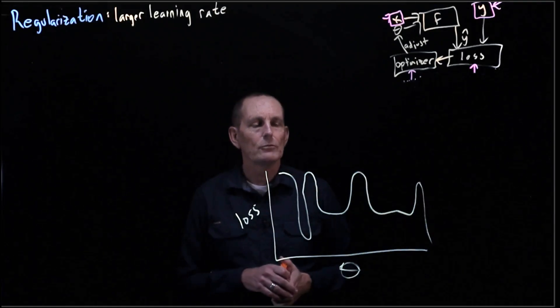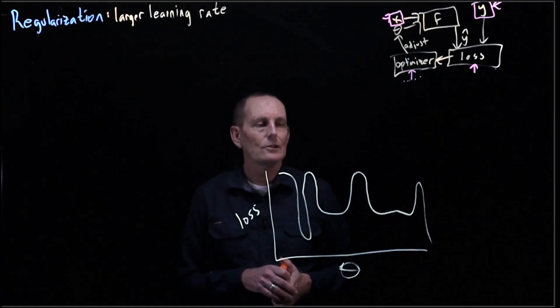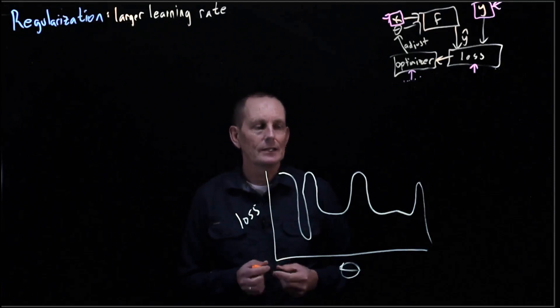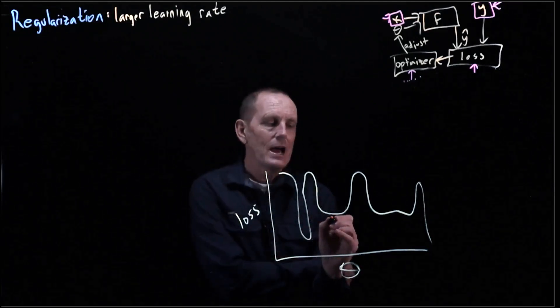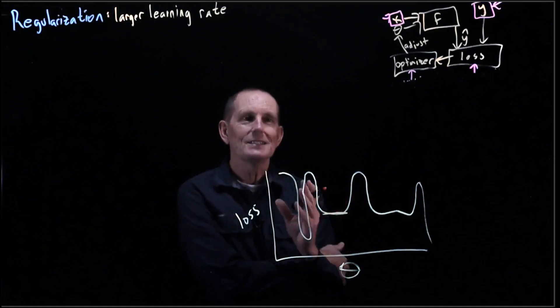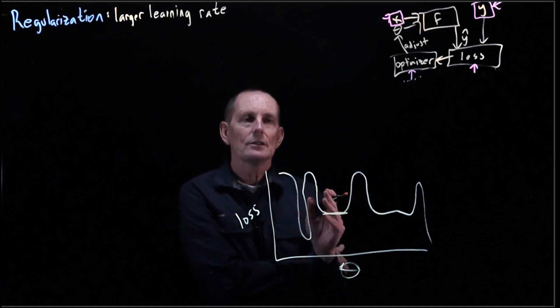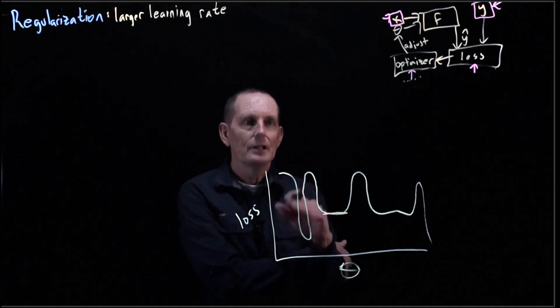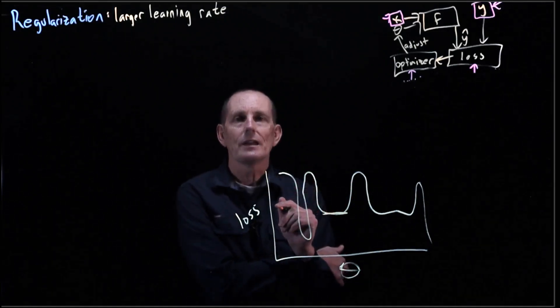So if we have a large learning rate, it can move us around in these broad areas and stay in these broad areas. If we're in a narrow area, it's more likely to take us out of that area.